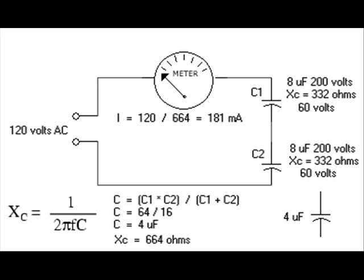Also notice in our current meter that since we increase the resistance, in this case reactance, we have reduced the current. So 124 volts divided by 664 ohms is 181 milliamps. But note again that this is reactive power, not true power.